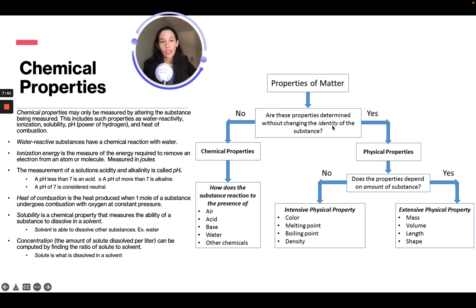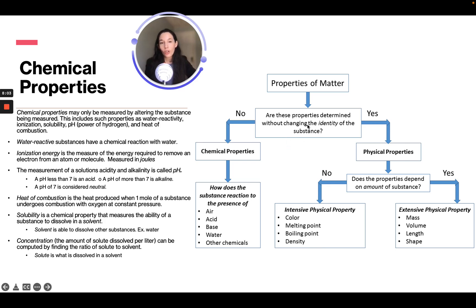Properties determined without changing the identity of the substance are physical properties. If the property depends on the amount of substance, it is an extensive physical property — like mass, volume, length, and shape. If not, it is an intensive physical property — like color, melting point, boiling point, and density. If the property is determined by altering the substance, it is a chemical property — such as how the substance reacts in the presence of air, acid, base, water, or other chemicals.